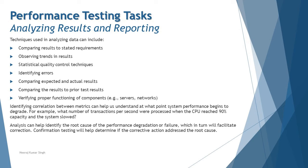Identifying correlation between metrics can help us understand at what point system performance begins to degrade. Just as in script correlation where dynamic data changes can cause execution failures, graphs and charts can be correlated to identify exactly at what point degradation started. For example, correlation can tell you the number of transactions per second being processed when CPU reached 90% capacity and the system slowed down.